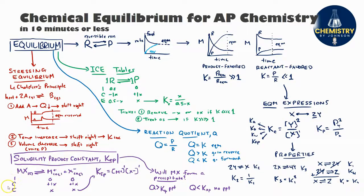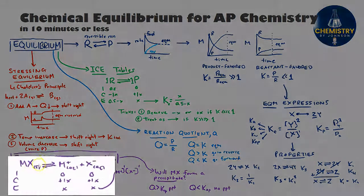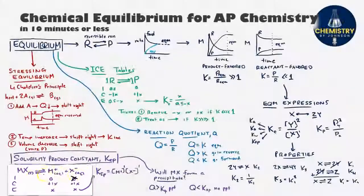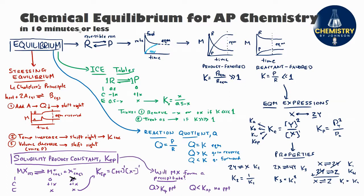There's also something called the common ion effect, which describes a scenario where a salt MX is being dissolved in a solution that already contains some M⁺ or X⁻ ions. If you're trying to dissolve MX in a solution that already has some X⁻, that's reflected in your ICE table by entering the existing X⁻ concentration in the initial row rather than zero. This has the overall effect of decreasing the solubility of MX. And that wraps it up for chemical equilibrium for AP Chemistry in 10-ish minutes or less — thanks for watching.